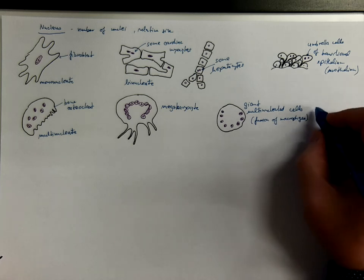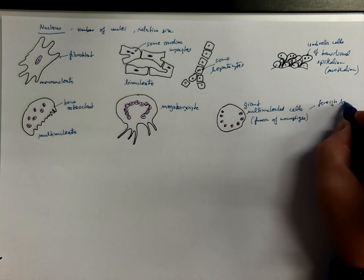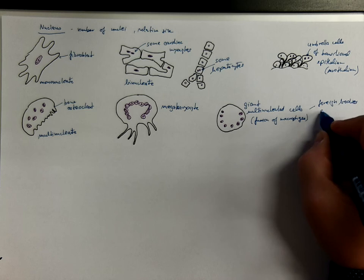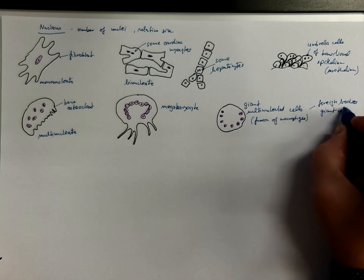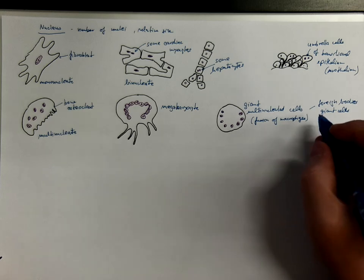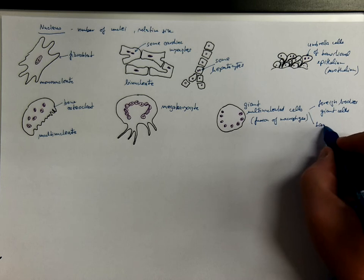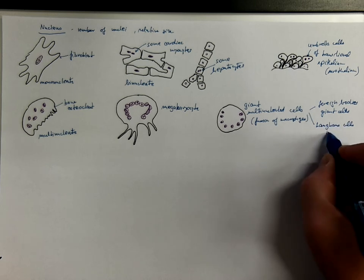And they occur as foreign body giant cells surrounding foreign particles or foreign materials in human tissues, or as so-called Langhans cells in tuberculosis.